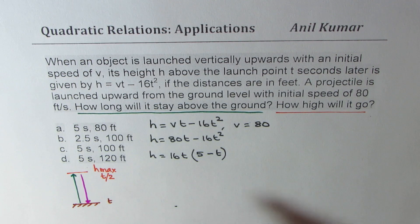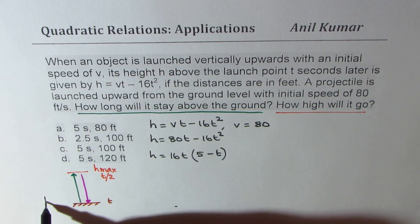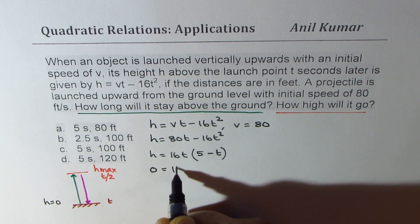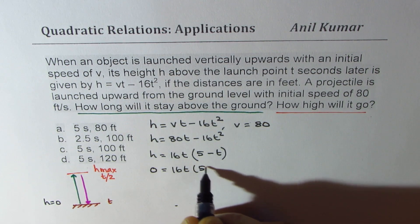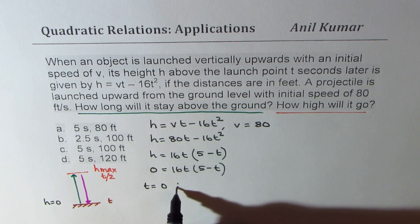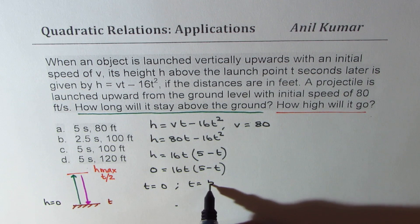Now, let's try to figure out the total time. So at this time, height = 0. So if I substitute 0 here, I get 16t(5 - t) = 0. And that is possible for t = 0 and for t = 5.